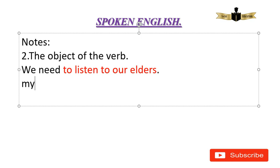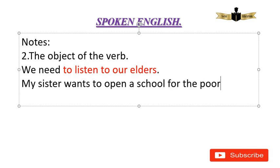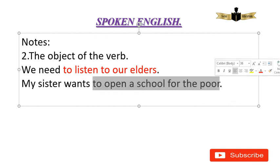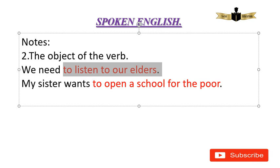Another example: 'My sister wants to open a school for the poor.' 'My sister' is the subject, 'wants' is the verb, and 'to open a school for the poor' is the object of the verb — which is the infinitive phrase. To confirm the infinitive phrase as object of the verb: 'We need to listen to our elders' — 'to listen to our elders' is the object.